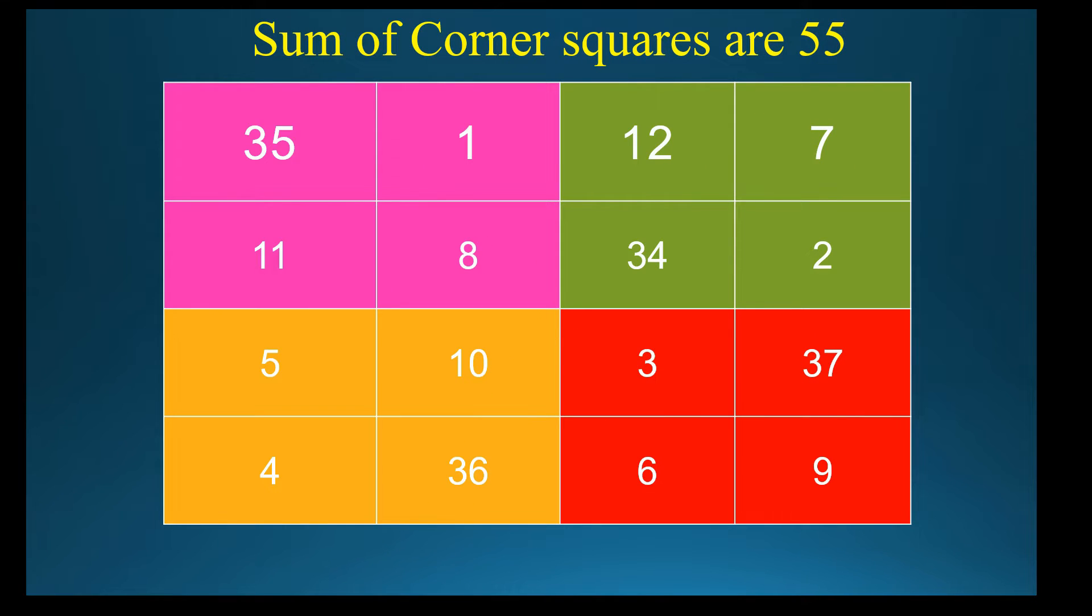Now you take corner squares. First, you take pink green color: 35, 1, 8, 11. How much the answer? 55.